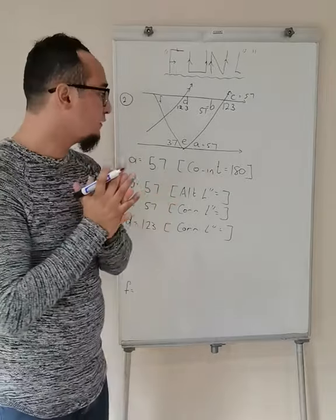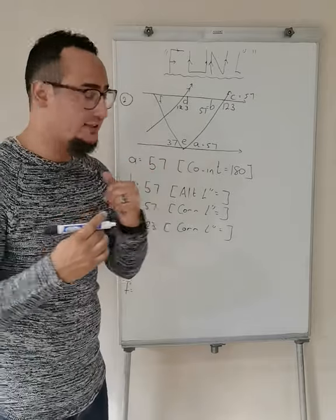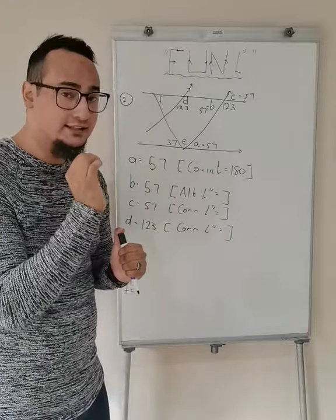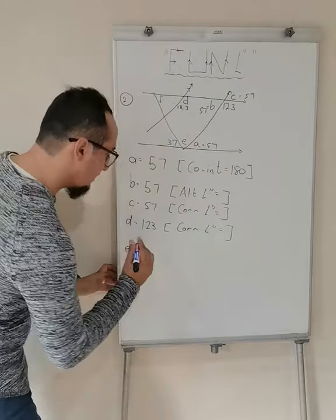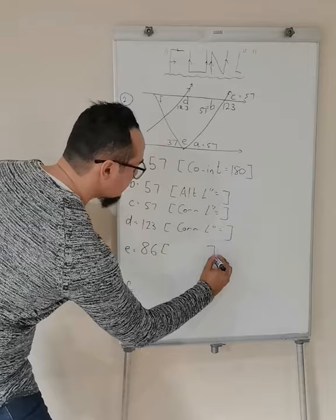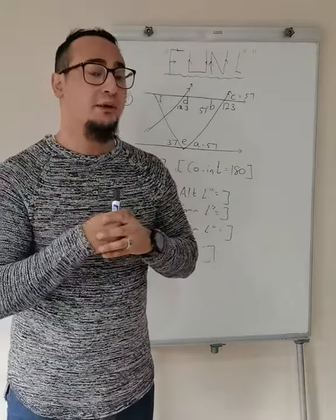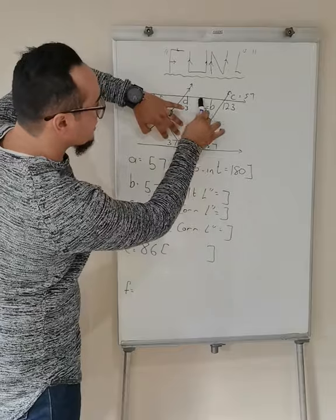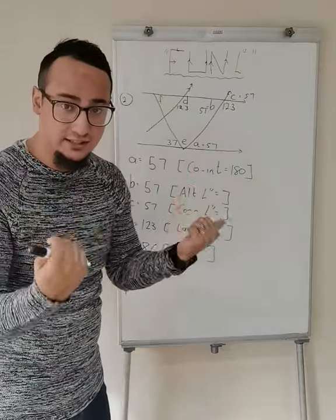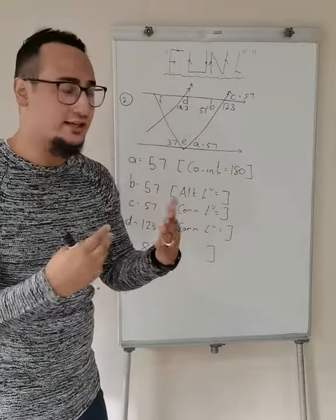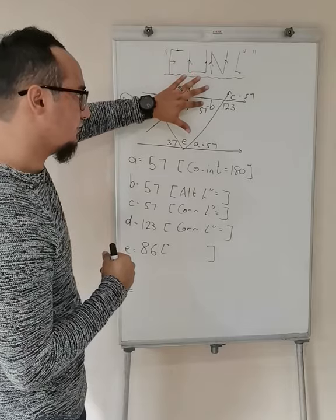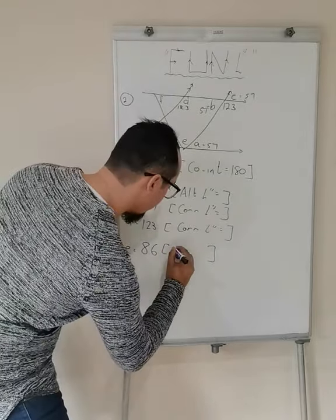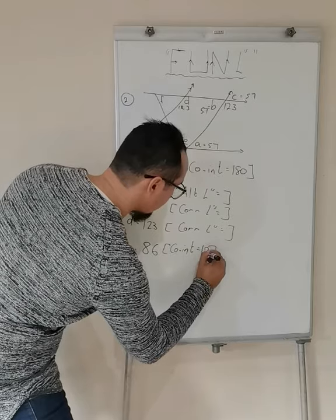Then I look at E. The easiest way to find E: E, angle A (57°), and 37 degrees all lie on a straight line. So I can say 180 minus 57 minus 37 is equal to 86 degrees. Now I'm busy with fun angles, so notice these two angles and B — they lie inside of this parallel line, meaning they are co-interior to one another. Co-interior angles add up to 180 degrees, so 180 minus 57 minus 37 still gives me 86 degrees. I'll use the reason co-interior angles equal 180 degrees.